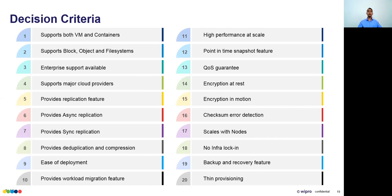Seventeenth: backup and recovery feature. Eighteenth: thin provisioning support. These criteria span security, software-defined storage, high availability, disaster recovery, and specific storage type or workload requirements — so you need to evaluate from multiple perspectives.